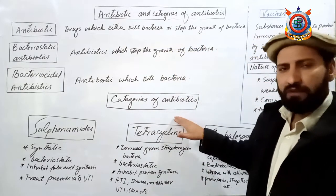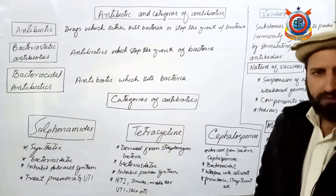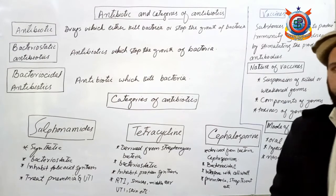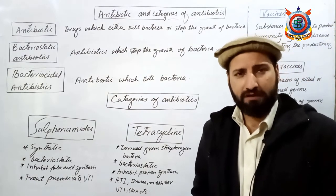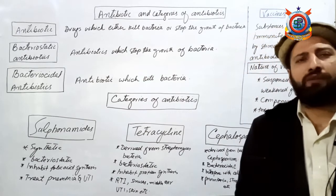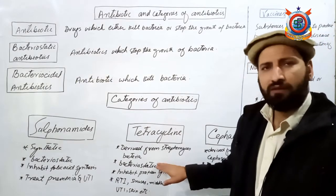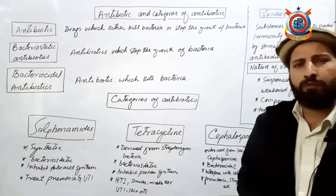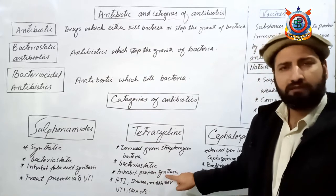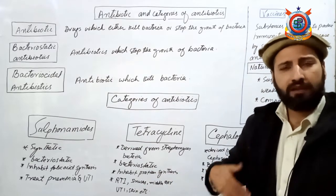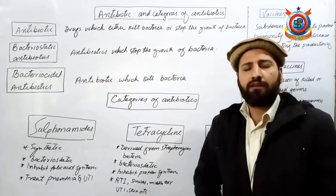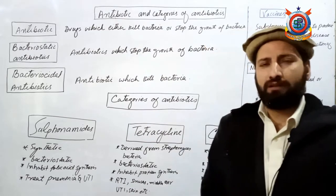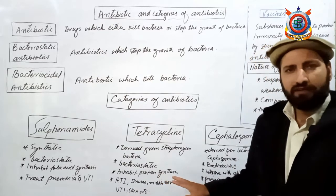دوسری category ہے tetracycline۔ Tetracycline بھی ایک قسم کے antibiotic ہیں اور یہ derived from a bacteria called Streptomyces ہیں - یعنی Streptomyces bacterium اس کو prepare کرتا ہے اور اس کے body سے اسے نکالا جاتا ہے۔ یہ بھی bacteriostatic in nature ہے - bacteria کو kill نہیں کرتا بلکہ bacterial reproduction کو روکتا ہے by inhibiting protein synthesis in the bacterial cell۔